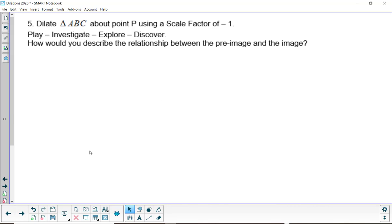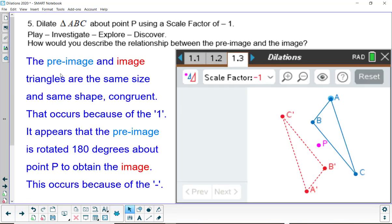So how would you describe the relationship? Well, the pre-image and the image triangles are the same size, the same shape. So they're congruent. This occurs because of the 1. And it appears that the pre-image is rotated 180 degrees about point P to obtain the image. And I think that's because of the negative sign. Press pause as needed.